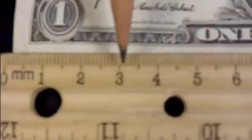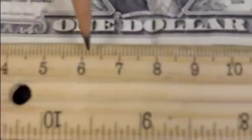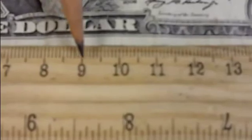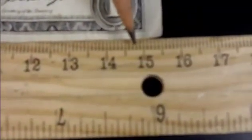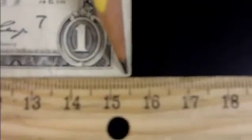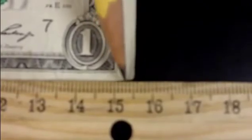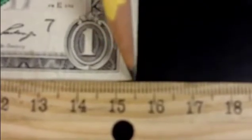One, two, three, four, five, six, seven, eight, nine, 10, 11, 12, 13, 14, 15. And each of these lines are tenths. So, 15 and there are five tenths, 15.5 centimeters.